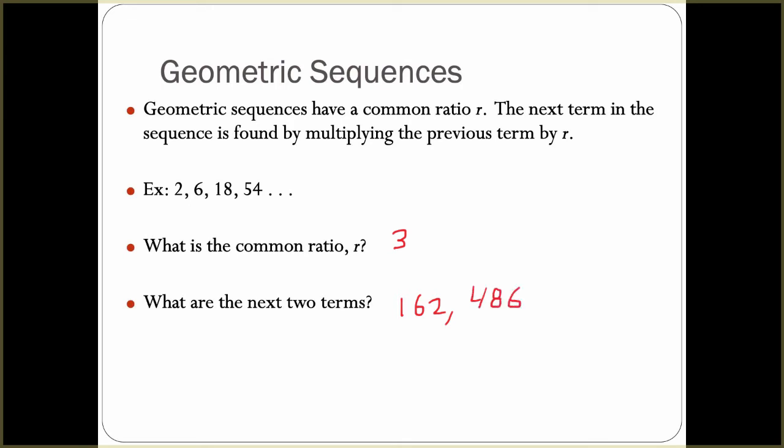If we don't know what that ratio is, what we do is take one number, divide by the previous, and we have to make sure that they all work. So we have 6 divided by 2, which is 3.